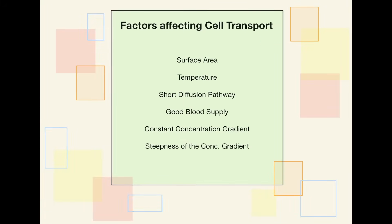The factors affecting cell transport are: surface area, temperature, a short diffusion pathway (meaning gases don't have to diffuse across many cells), a good blood supply (for example, lots of capillaries around the alveoli ensure there is always somewhere for oxygen to go), a constant concentration gradient (for example, wind pulling oxygen particles away from a leaf maintains that gradient), and the steepness of the concentration gradient — a very high concentration in one area moving to an area with almost nothing will happen much faster than if the concentrations are fairly similar.